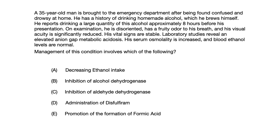A 35-year-old man is brought to the emergency department after being found confused and drowsy at home. He has a history of drinking homemade alcohol, which he brews himself. He reports drinking a large quantity of this alcohol approximately 8 hours before presentation. On exam, he's disoriented, has a fruity odor to his breath, and his visual acuity is significantly reduced. His vital signs are stable. Lab studies reveal an elevated anion gap metabolic acidosis. His serum osmolality is increased and blood ethanol levels are normal.